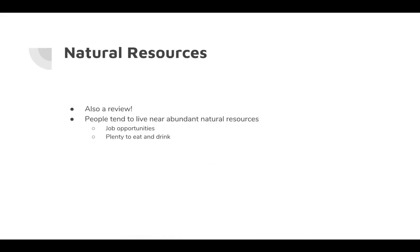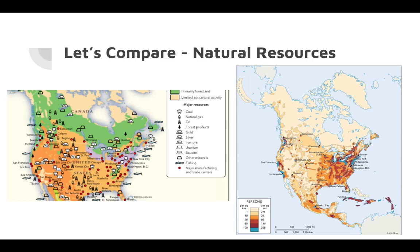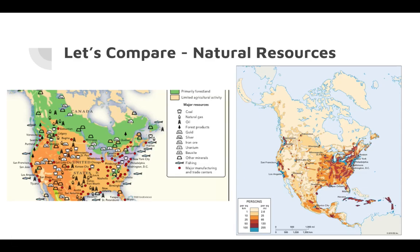Natural resources are also a review. People tend to live near abundant natural resources for the job opportunities, and there's also plenty to eat and drink. Looking at our natural resources map, we see coal mining, fishing, and major manufacturing and trade centers — and that's why you see a majority of people living in those areas.